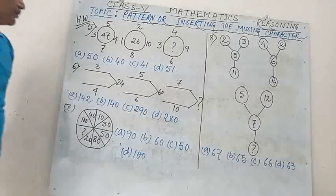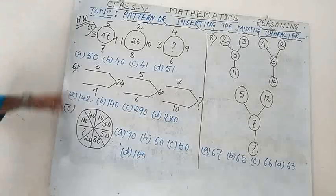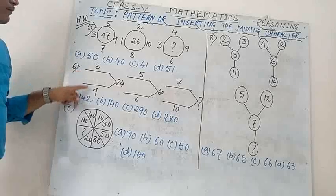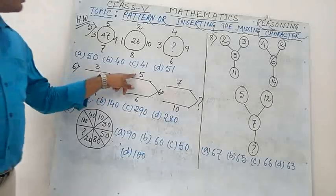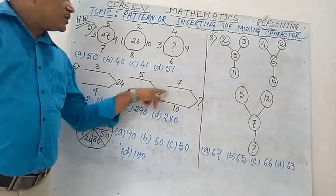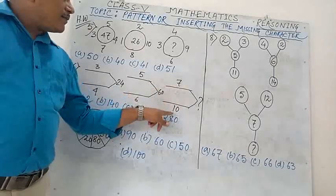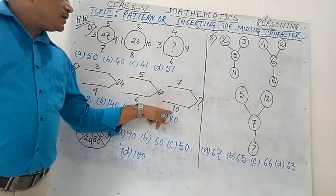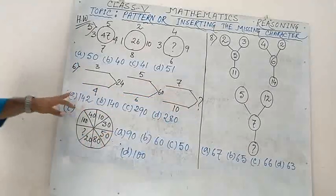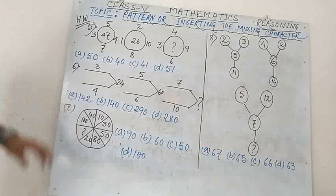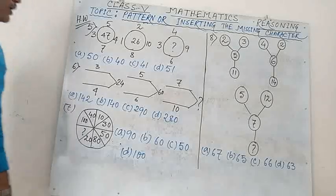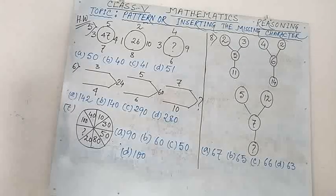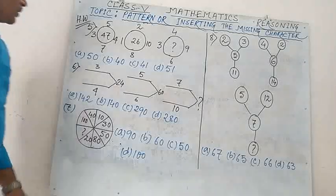Number 6: 3, 4 → 24; 5, 6 → 16; 7, 10 → question mark. Options: A) 142, B) 140, C) 290, D) 280.